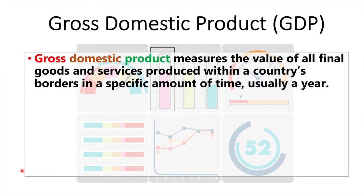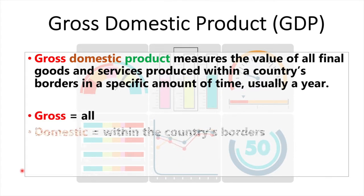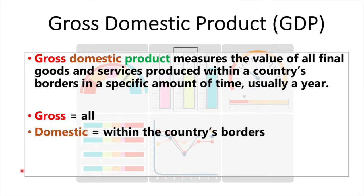Gross domestic product measures the value of all final goods and services produced within a country's borders in a specific amount of time, usually a year. Gross means all; domestic means within the country's borders. It does not matter if the firm is foreign or domestic, or the worker is or is not a citizen — their earnings within the country are counted towards its GDP. For example, the earnings of Japanese workers and firms located in China count toward China's GDP, not Japan's.